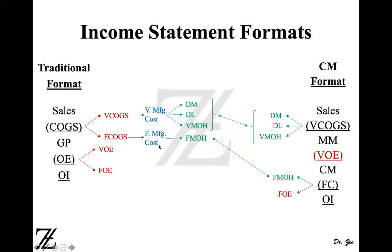Fixed manufacturing cost is the fixed factory overhead — such as factory depreciation, depreciation on factory equipment, supervisor salary, and security guard salary — anything related to the factory that is fixed. GAAP requires that all manufacturing-related costs be combined together, so variable and fixed manufacturing costs are combined into cost of goods sold. In the contribution margin format, however, we separate out all variable components and all fixed components.